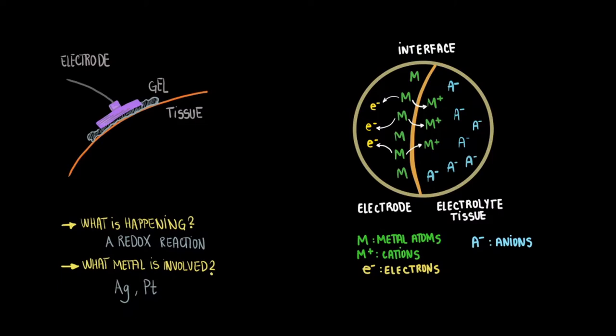The hypothetical metal M involved could be silver or platinum, for example. As metal atoms leave to become cations in the electrolyte solution, they create a half cell potential. An important thing to note is that this process is completely reversible.